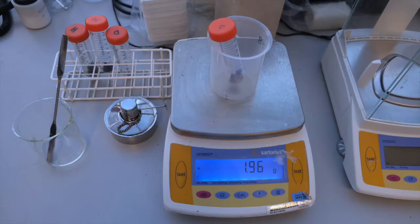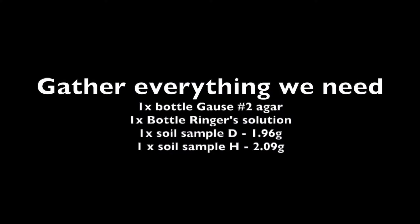Sample D is 1.96 grams. Next we are going to make GALS number 2 agar plates and re-suspend our soil samples in Ringer's solution.